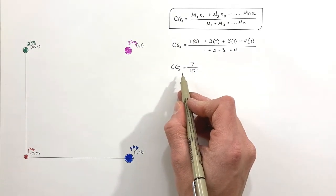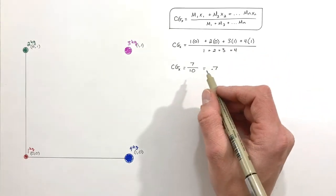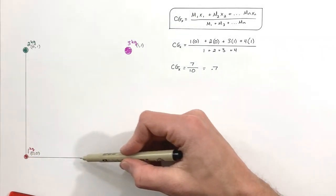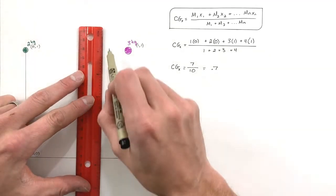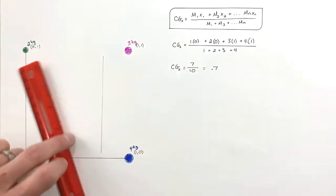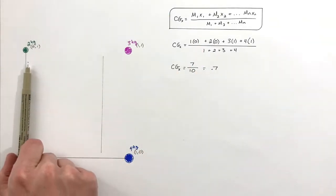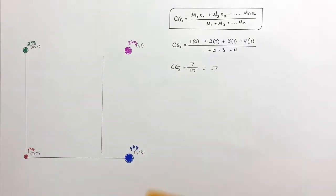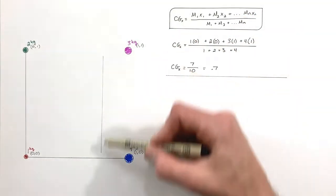When we reduce this down, we get the center of gravity along the x-axis is seven-tenths, or 0.7 meters. This tells us the center of gravity is 0.7 meters along the x-axis from the origin, meaning the center of gravity of this assembly lies somewhere along this vertical line. We don't know the vertical position yet — we'll calculate that next.